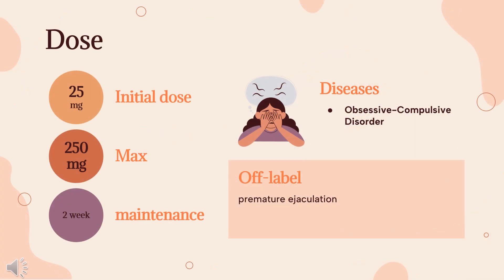Dose — Obsessive-compulsive disorder: 25 mg orally once daily initially. Gradually increase to 100 mg per day, divided with meals, over 2 weeks, then may increase further to 250 mg per day maximum. May give as a single daily dose at bedtime once tolerated.